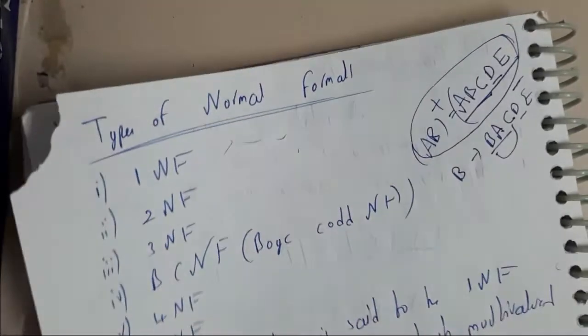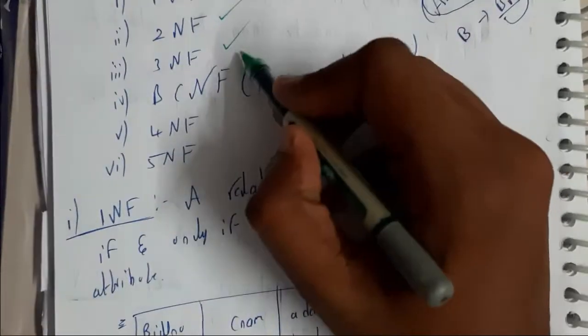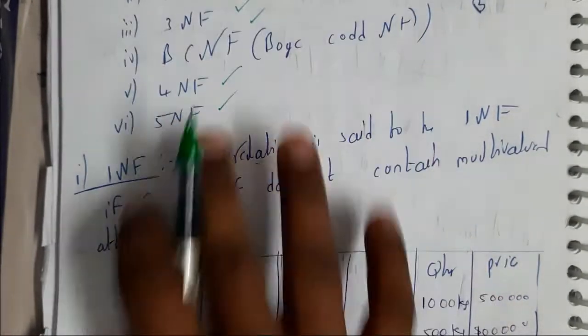Now let us go through types of normal forms as I have told you. First normal form, second normal form, third normal form, Boyce-Codd normal form, fourth normal form, fifth normal form. So these are all the six normal forms.